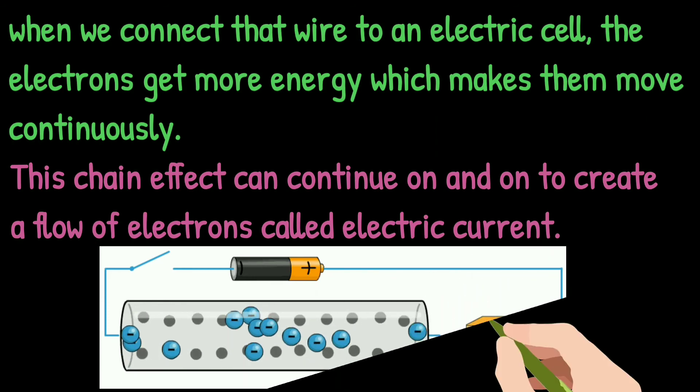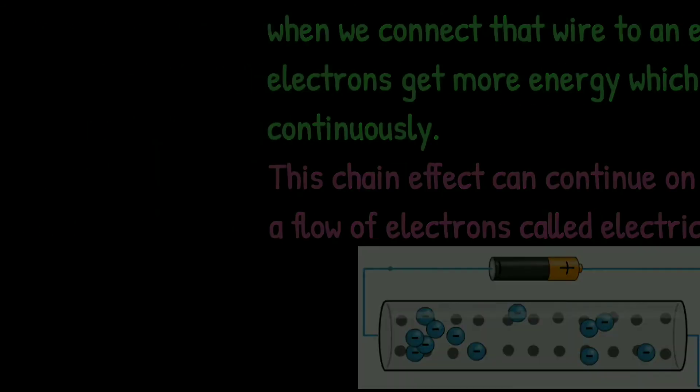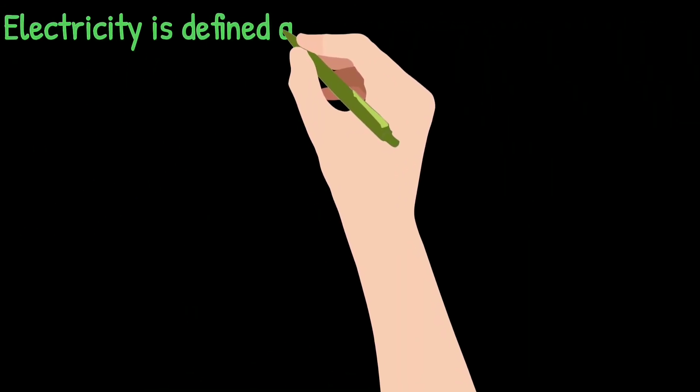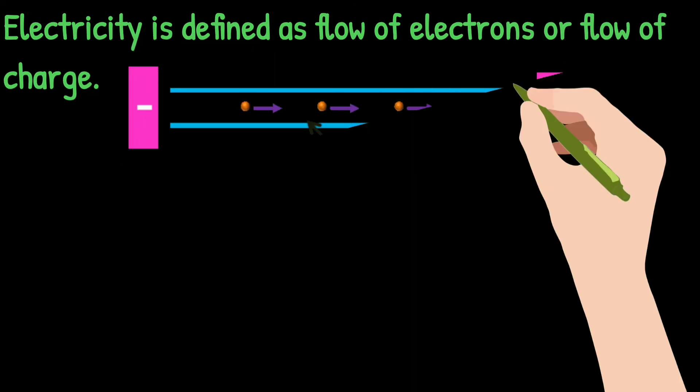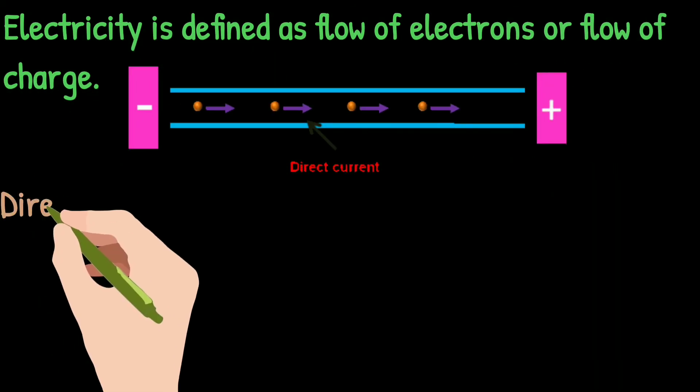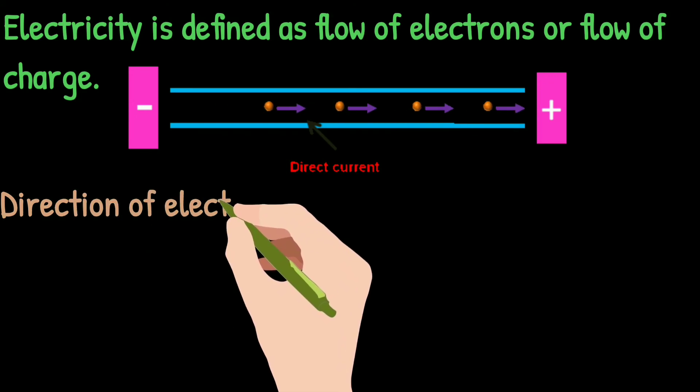Electricity is defined as flow of electrons or flow of charge. Direction of electron flow is from negative to positive terminal of an electric cell.